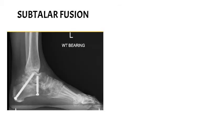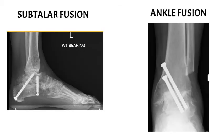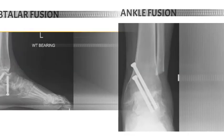And this is what a subtalar fusion will look like on an x-ray. We put some screws across the joint, whereas an ankle fusion is further up. It's above the level of what we call a subtalar fusion.